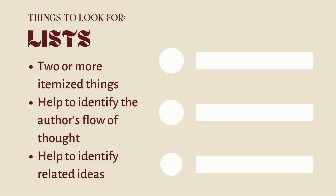The next thing to look for is lists. More than two things that are itemized we can count as a list. Lists help us identify the progression of the author's thought process — we want to get into the mind of the author, follow their flow of thought. Lists also help us identify ideas that are related to each other. Notice whether there's a significance to the order of things, or to the length of the list — is the author trying to communicate something through the brevity or breadth of the list?